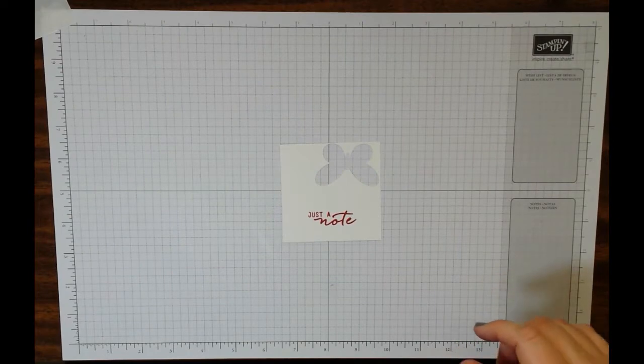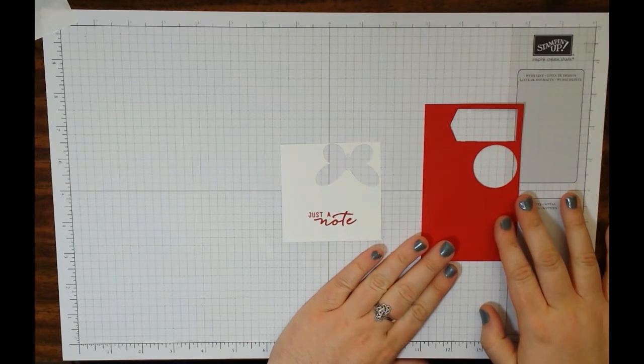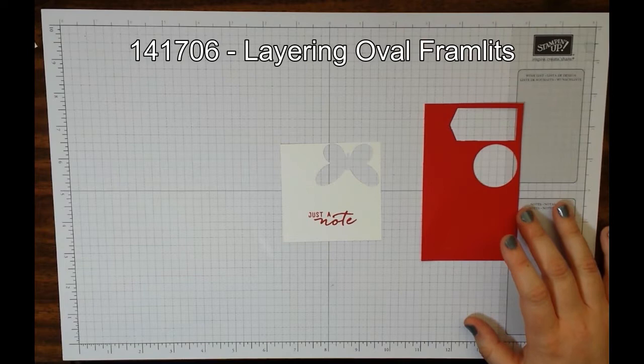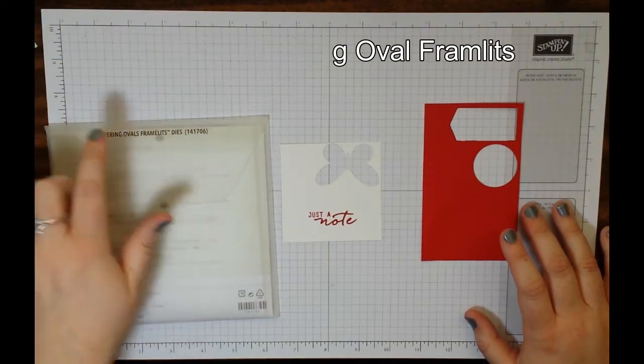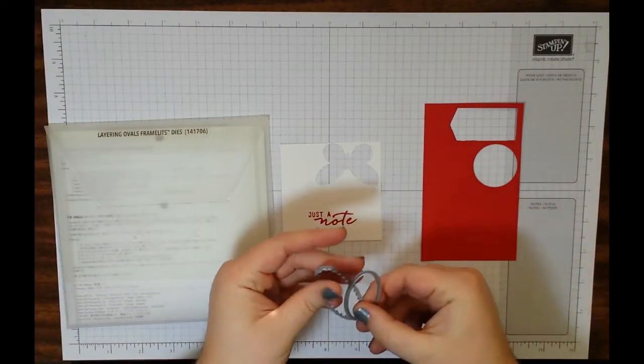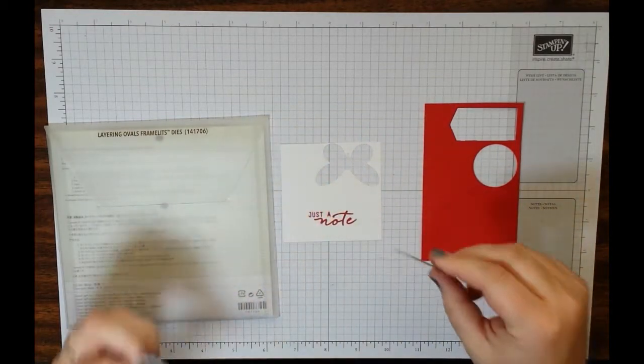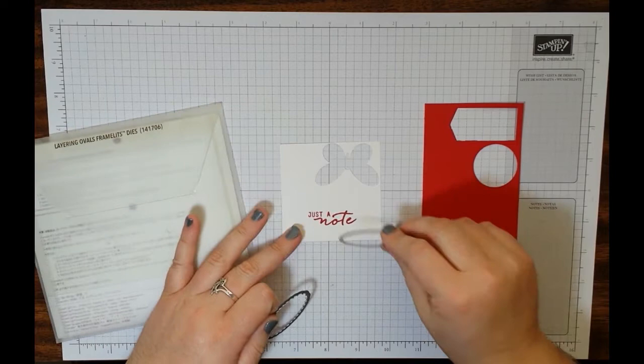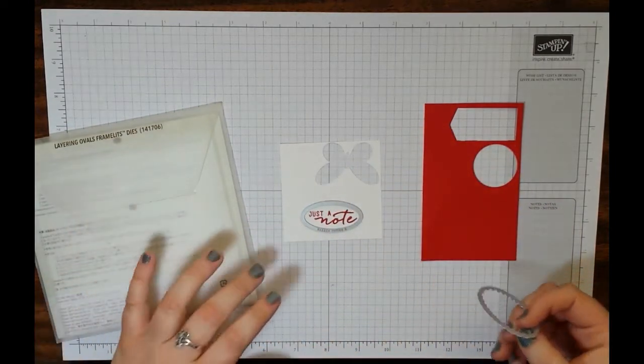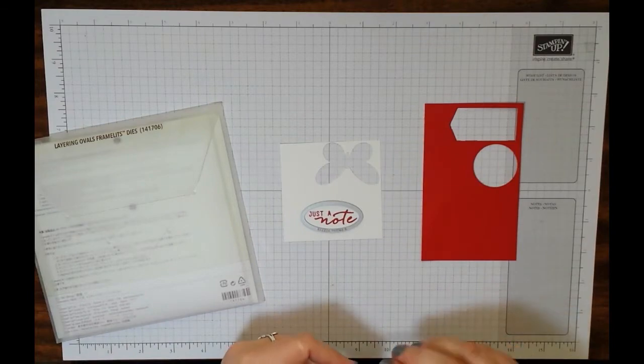While that's giving a few seconds to dry, grab yourself a piece of Real Red cardstock. Then go ahead and grab your layering oval framelits dies. We're going to use the two smallest ones there are - the smallest oval and then the smallest scallop oval. I can tell you that your smallest oval does fit around that. If you are using a little bit bigger of a sentiment, just go ahead and test it before you actually run it through your Big Shot.